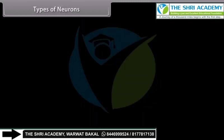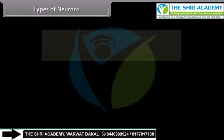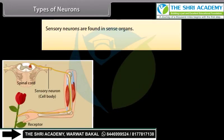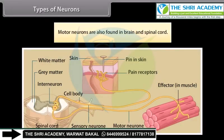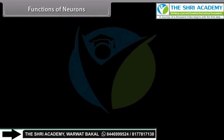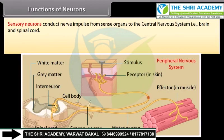On the basis of their functions, neurons are of three types: sensory, association/relaying, and motor. Sensory neurons are found in sense organs. Association/relaying neurons are found in the brain and spinal cord. Motor neurons are also found in the brain and spinal cord. Sensory neurons conduct nerve impulses from sense organs to the central nervous system, that is, the brain and spinal cord.